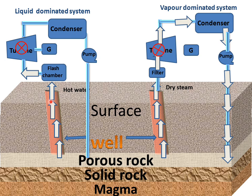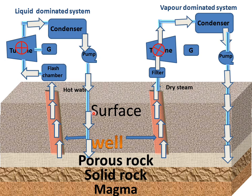When the separated steam goes to the turbine, the turbine starts rotating, and after doing this work it goes to the condenser. The condenser changes the phase of the steam and converts it into hot water, and by the help of the pump it is sent back to the porous rock for further working. This is the working of the vapor-dominated system and liquid-dominated system. From these two systems, we can extract earth energy and convert it into electricity.